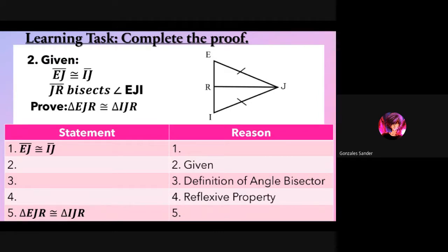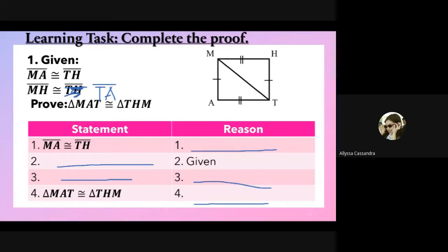Number two: given side EJ is congruent to side IJ, and JR bisects angle EJI. Prove that triangle EJR is congruent to triangle IJR. Items 1 through 5 are blank. Please take a screenshot. Post your answers in Google Classroom and send them.